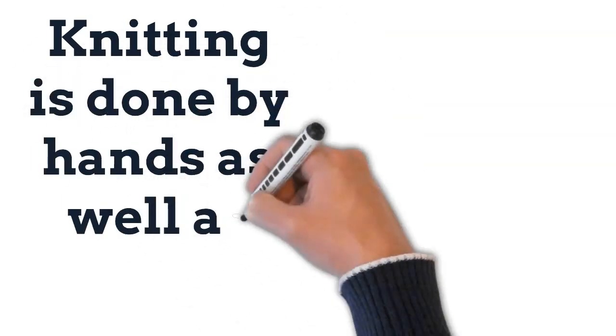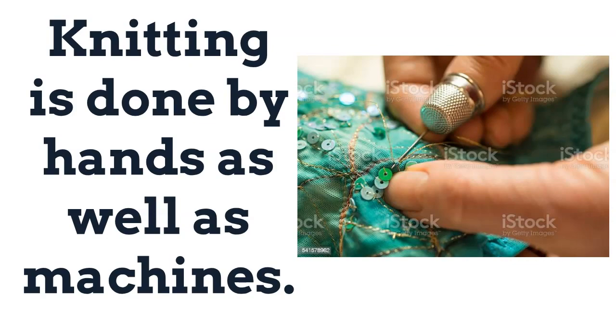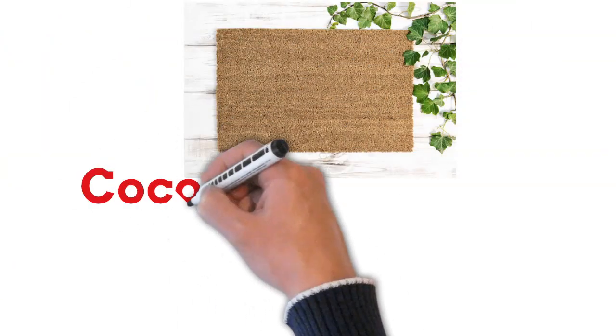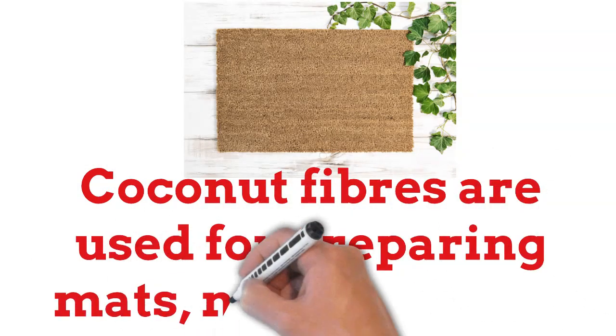Knitting is done by hands as well as machines. Coconut fibers are used for preparing mats, nets, ropes, etc.